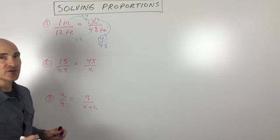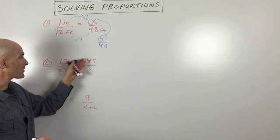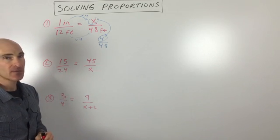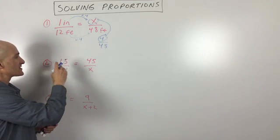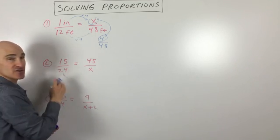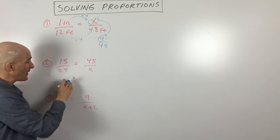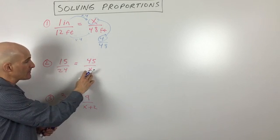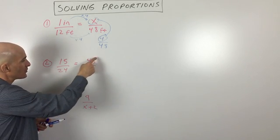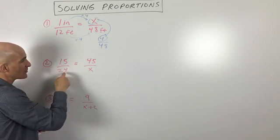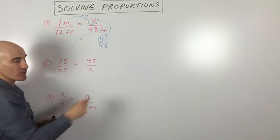Let's look at another example. This one we have 15 over 24 equals 45 over x. So another way to do this problem is, instead of saying 15 times 3 is 45, if I multiply the top by 3, let me multiply the bottom by 3, another way to do this is to cross multiply. They call that the cross product. So the product of these two multiply together equals the product of these two multiply together.